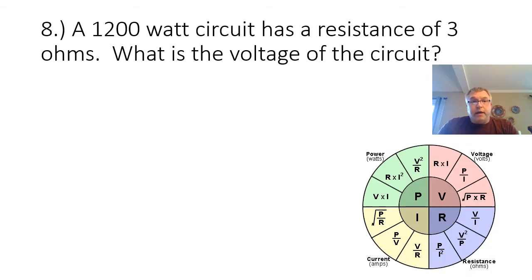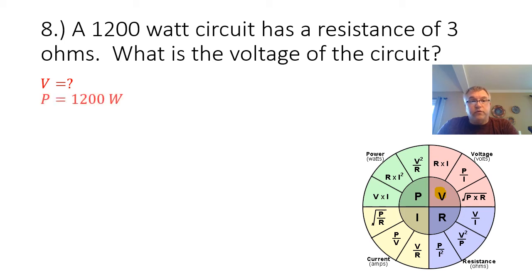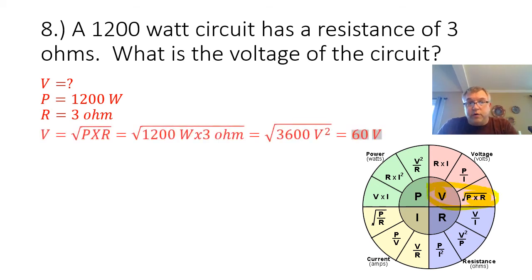Problem number eight: a 1,200-watt circuit has a resistance of 3 ohms. What is the voltage of the circuit? We're looking for the voltage, and our given values are the power at 1,200 watts and the resistance at 3 ohms. Our formula is V equals the square root of P times R. The square root of 1,200 times 3 is the square root of 3,600, which gives us 60 volts.